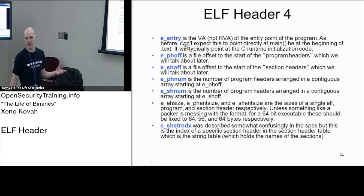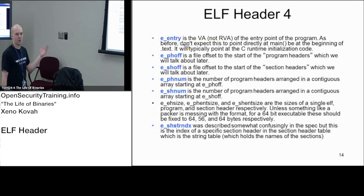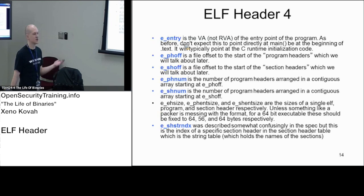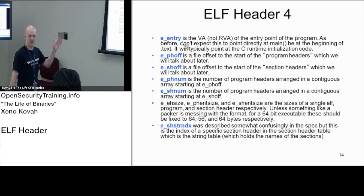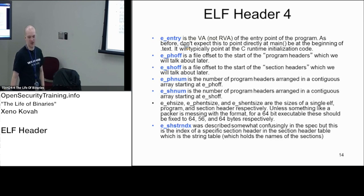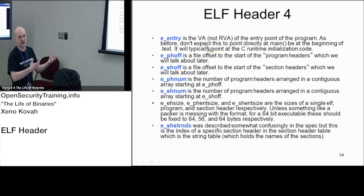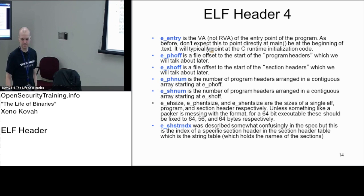Next we have the entry field, which is directly analogous to AddressOfEntryPoint in the PE headers — it says where's the first place code will start executing. There are no TLS callbacks in Linux or the ELF format, so this is going to be the first address that code is actually executed. This is a virtual address, not an RVA, so you can use it as-is unless you're using ASLR, in which case you'd need to figure out where you actually got loaded, compute the difference, and add it in. Entry is simply where code starts.